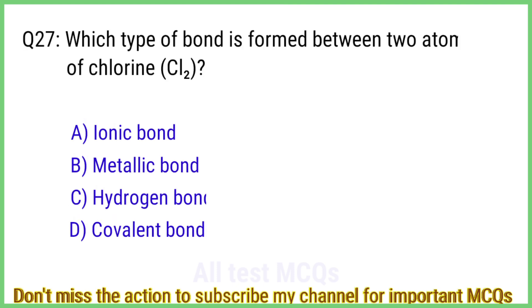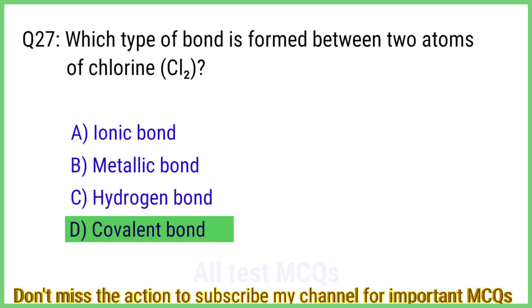Question number 27. Which type of bond is formed between two atoms of chlorine, Cl2? The right answer is option D: Covalent bond.